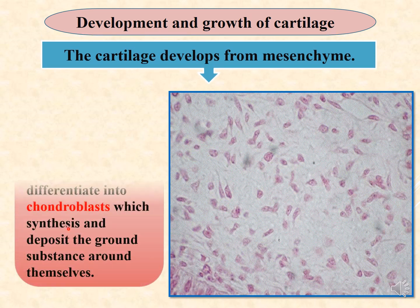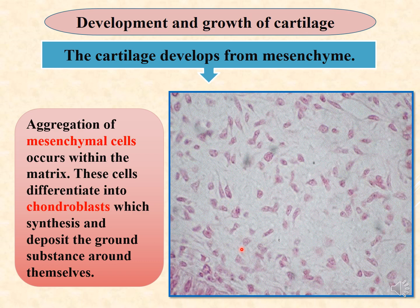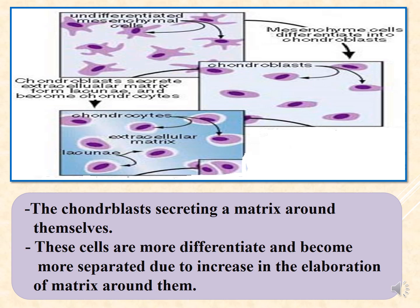Development and growth of cartilage: cartilage develops from mesenchymal tissue. Mesenchymal cells aggregate and differentiate to transform into chondroblasts. When they become chondroblasts, they begin to synthesize and deposit the ground substance around themselves. The chondroblasts then differentiate further to become chondrocytes.